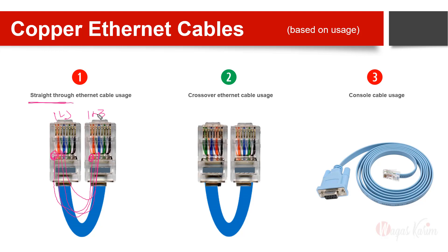In a crossover cable, pin number one on one side is not mapped straight — it is swapped within the cable. So it goes to pin number three on the other side. The number two on the left side maps to pin number six on the right side. Some cables are crossed, which is why it's called a crossover cable.